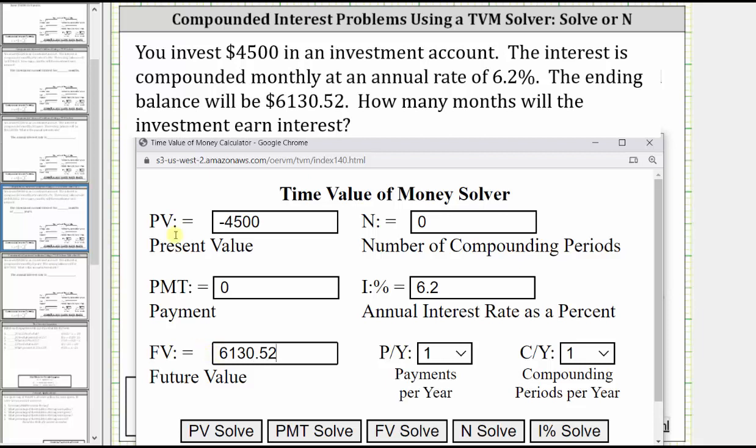Because the interest is compounded monthly, the compounding periods per year is 12. When we change this to 12, the payments per year will also change to 12. And now we click N solve.